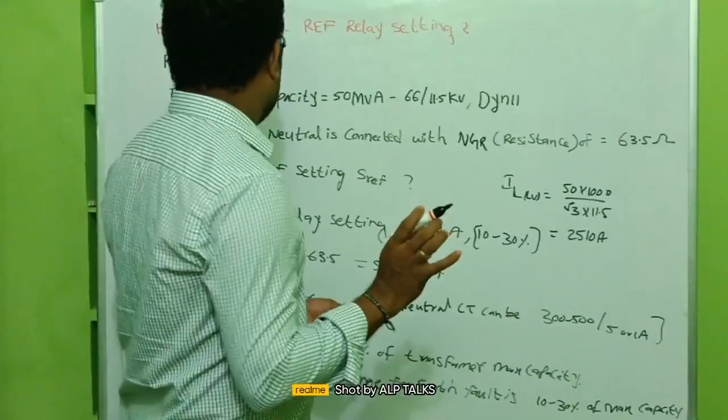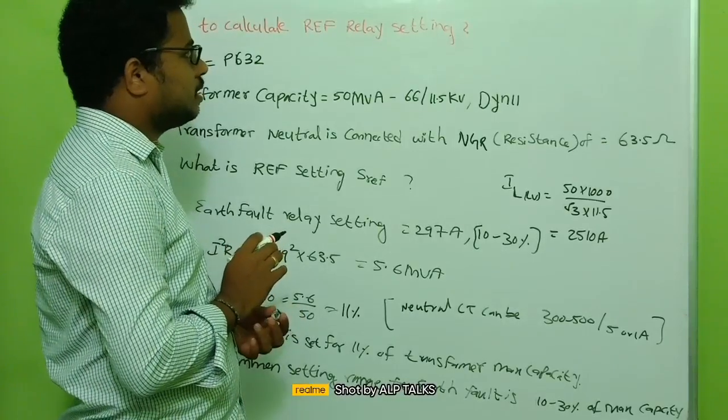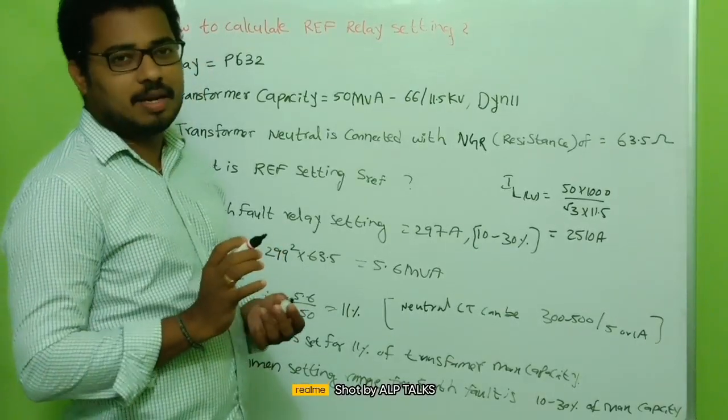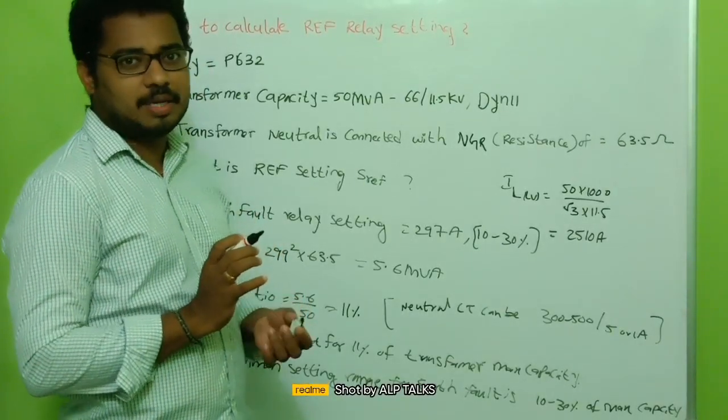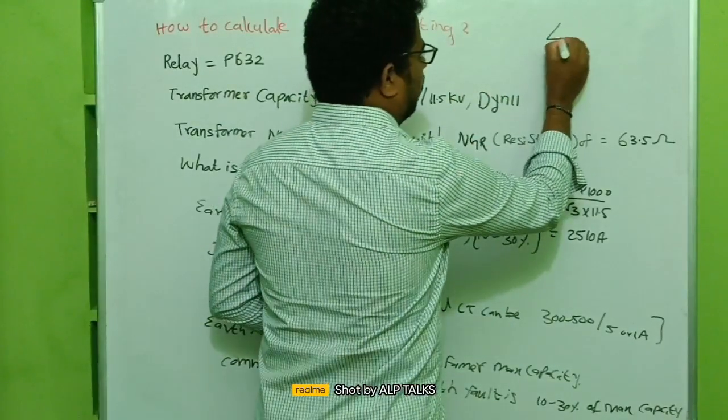Good morning and good evening everyone. Recently I received a question on REF protection, restricted earth fault protection setting, and how we can calculate the ampere. For example, say you have a DY transformer.